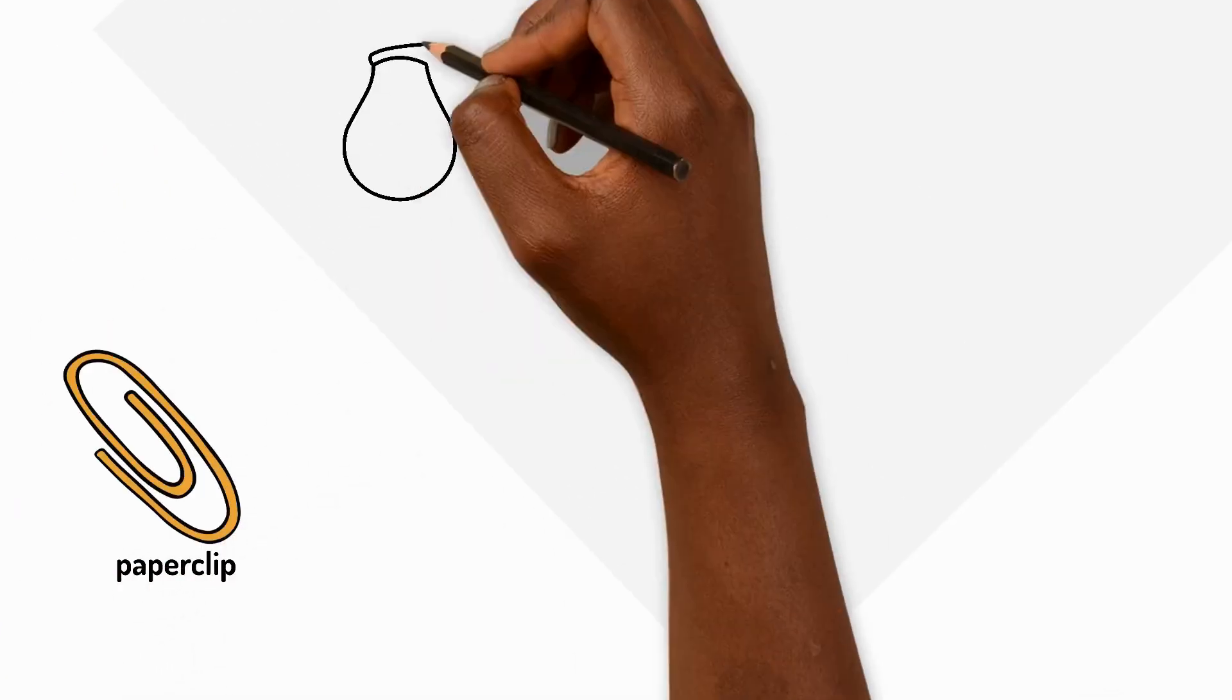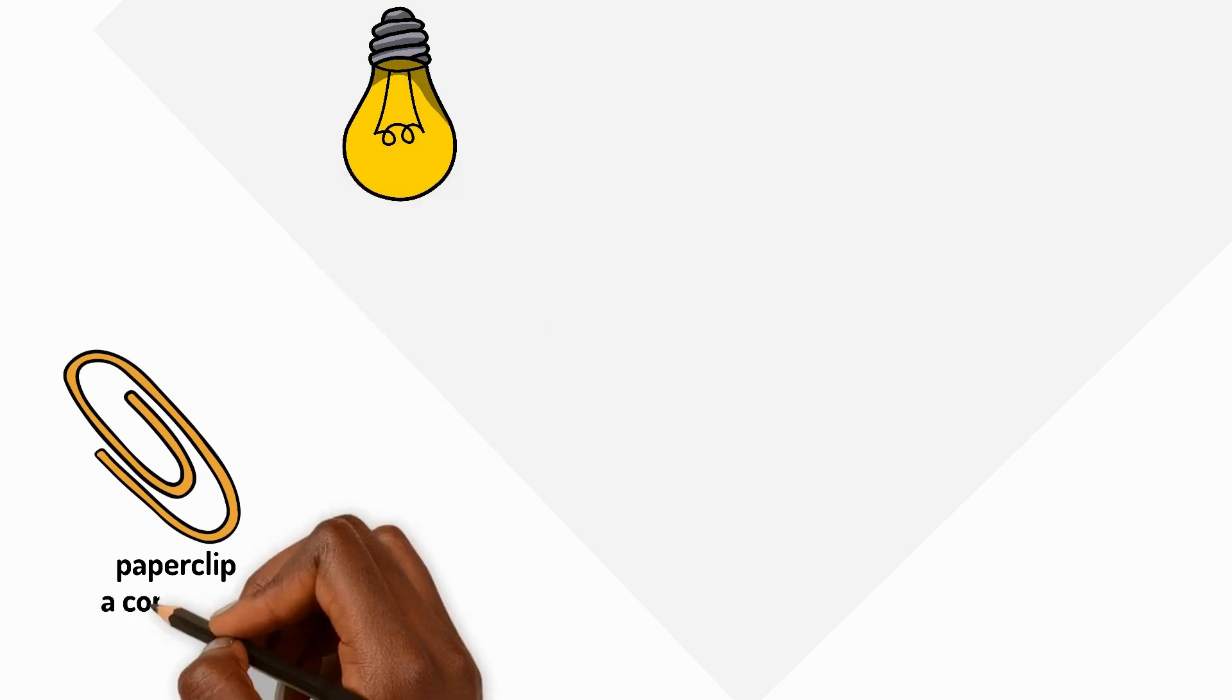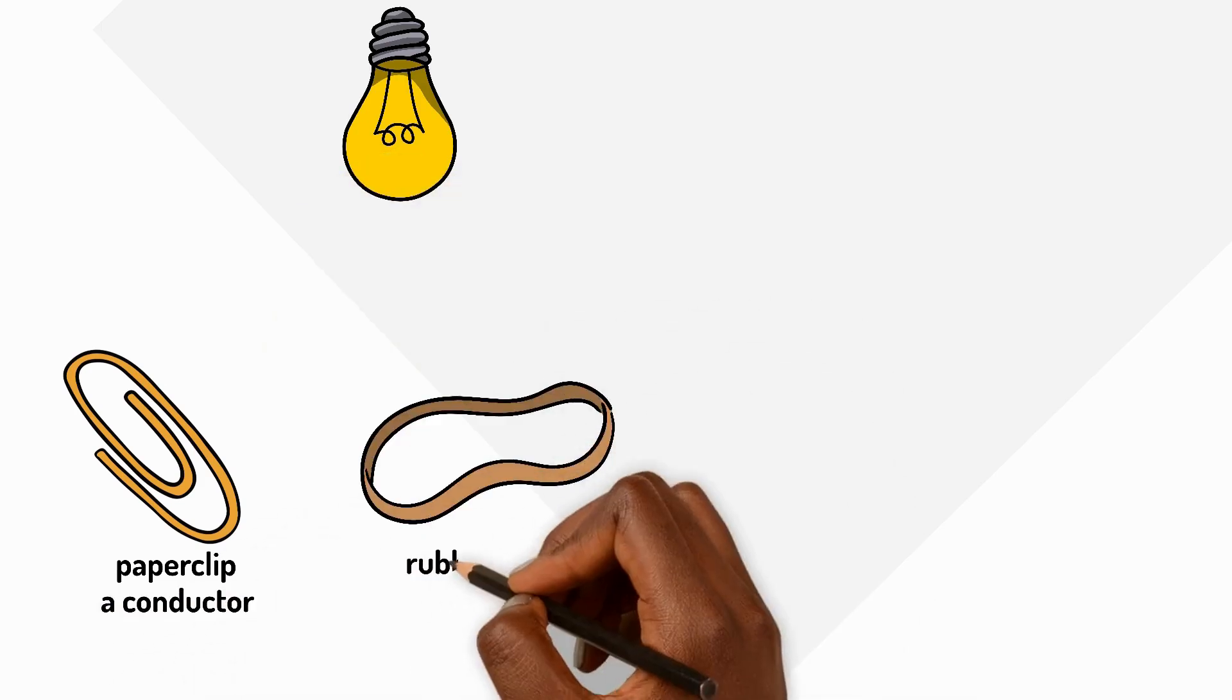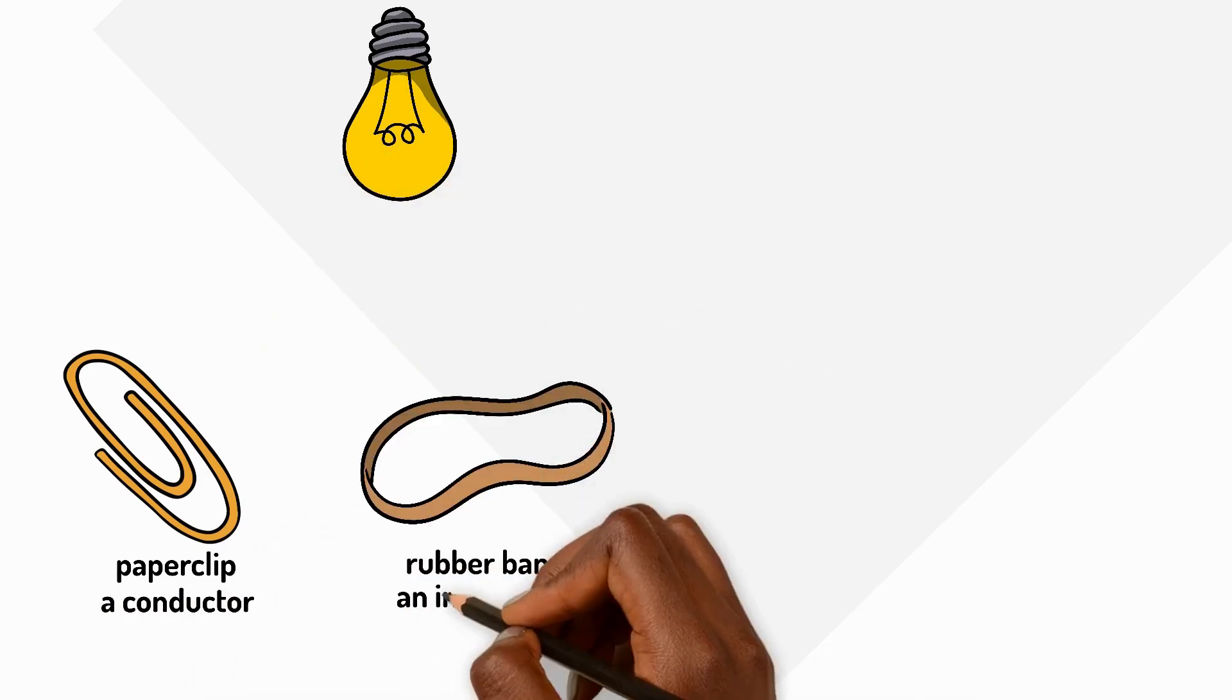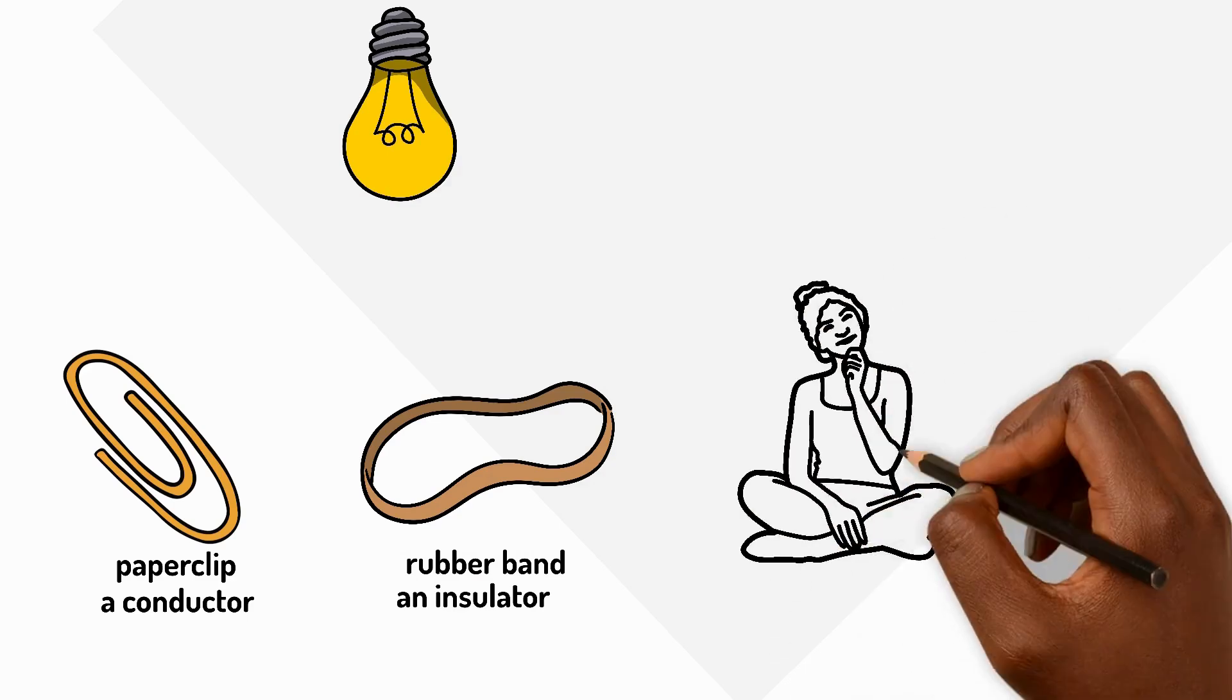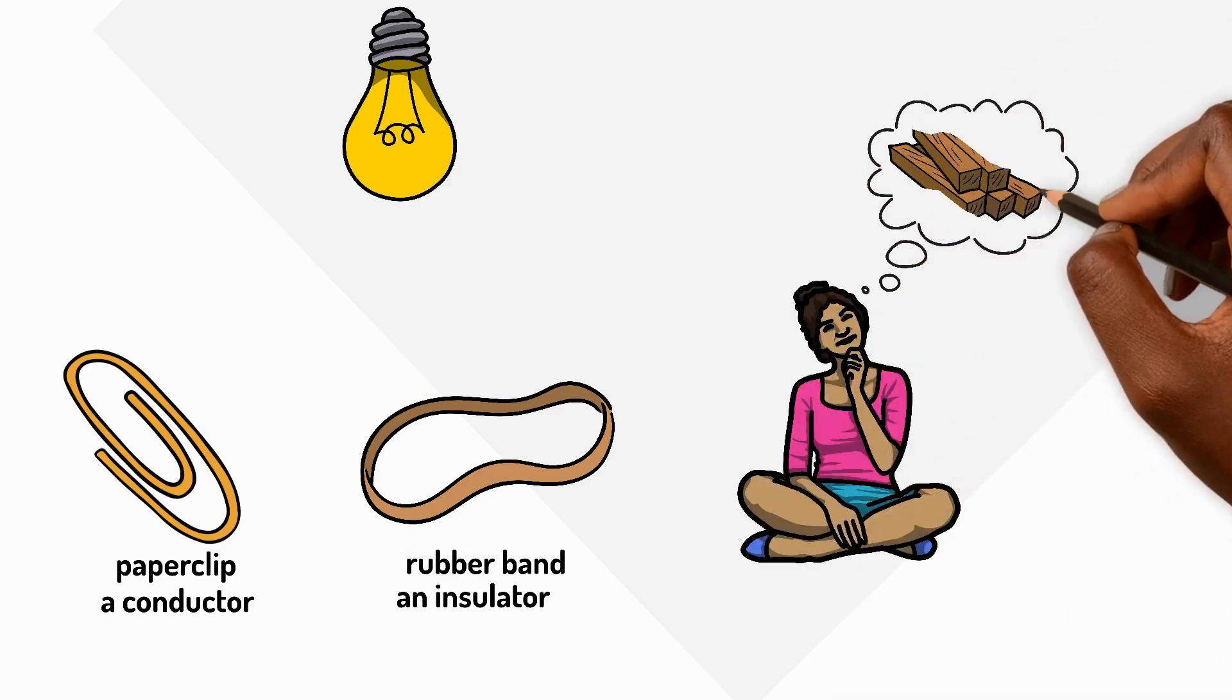When we test a paper clip, the bulb lights up. It's a conductor. But when we test a rubber band, the bulb stays off. It's an insulator. What do you think would happen with a piece of wood?